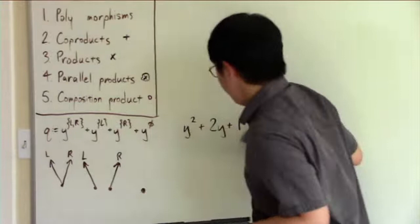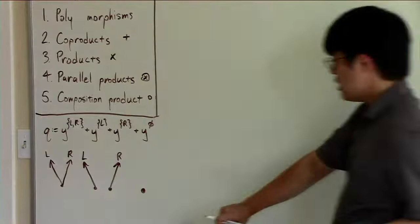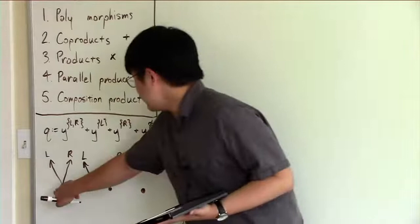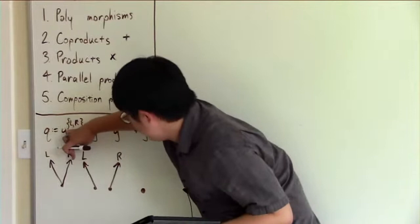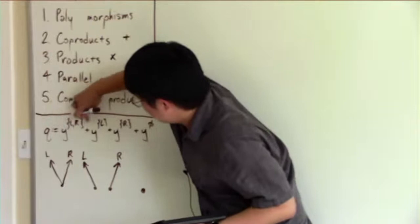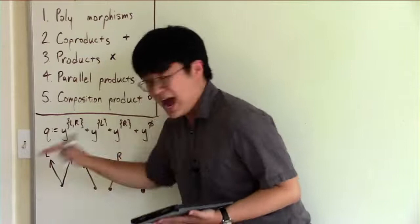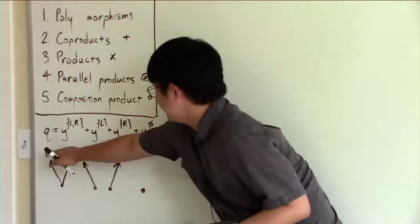We saw a couple of different ways of viewing these polynomials. We could draw them out as these tree pictures, where each root represents one of the summands of the polynomial, which we also call the positions of the polynomial. Each leaf from each root are the elements of the exponents, which we call the directions of the polynomial at those positions.